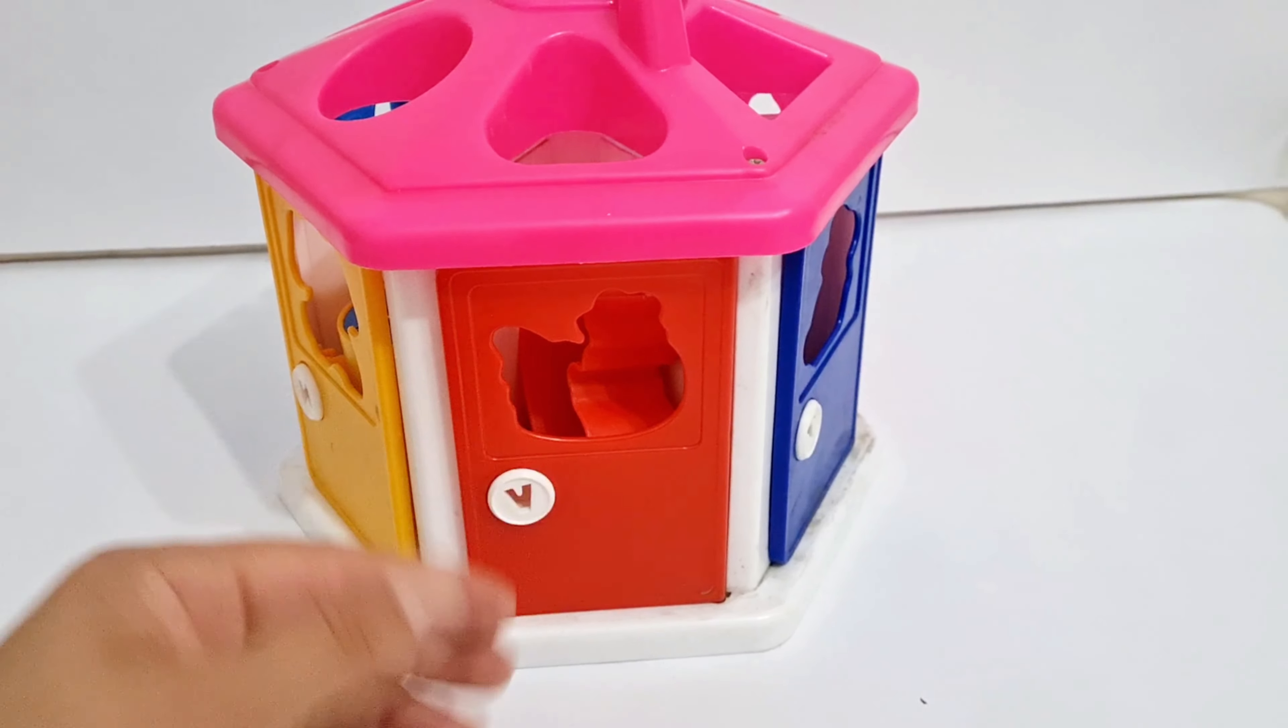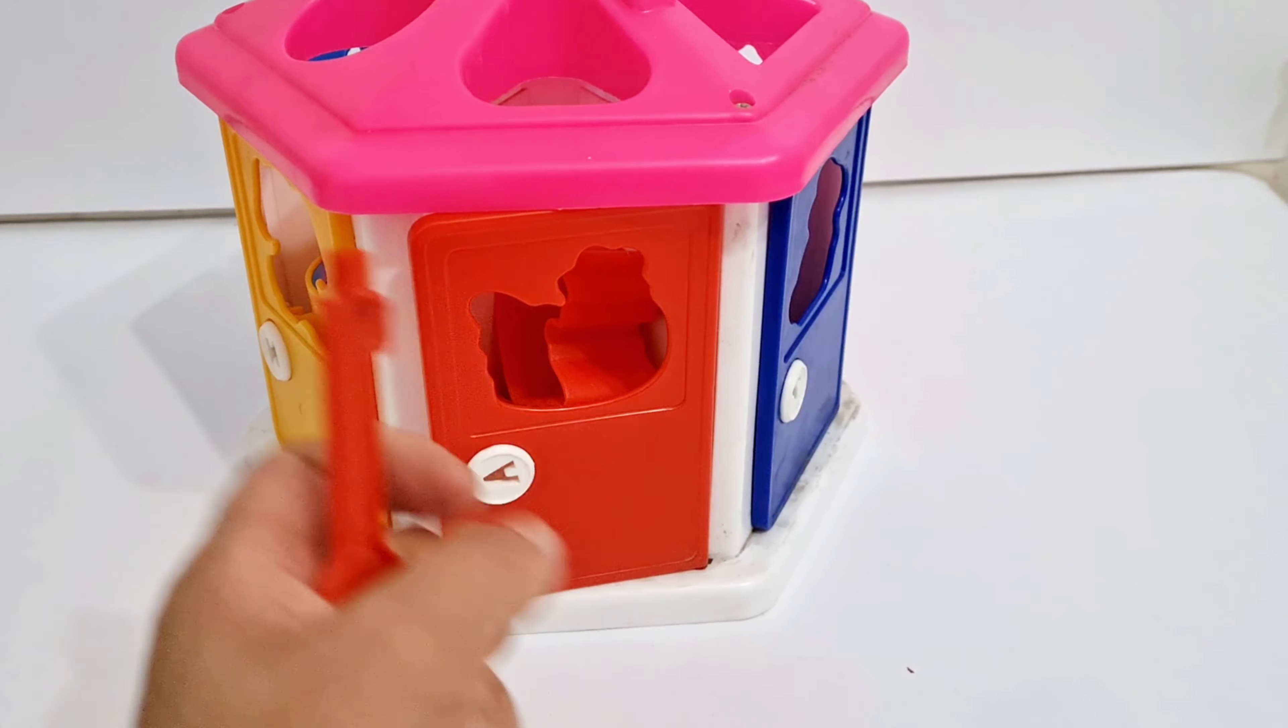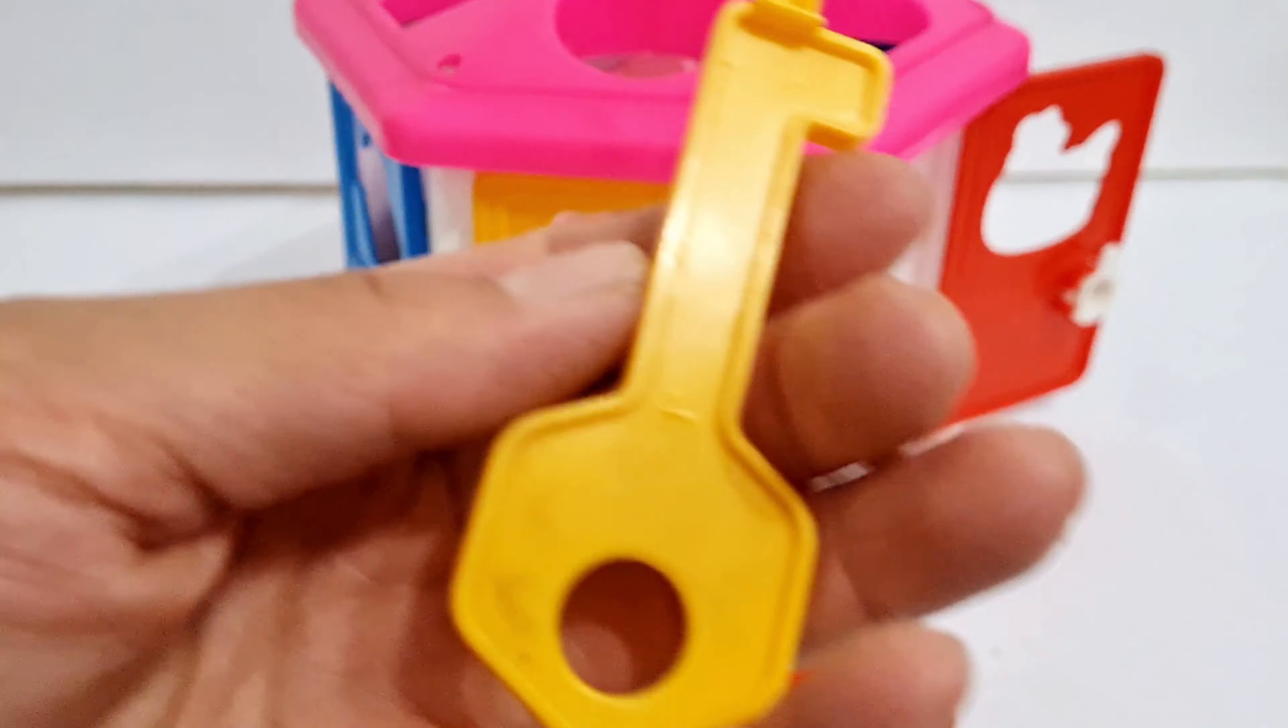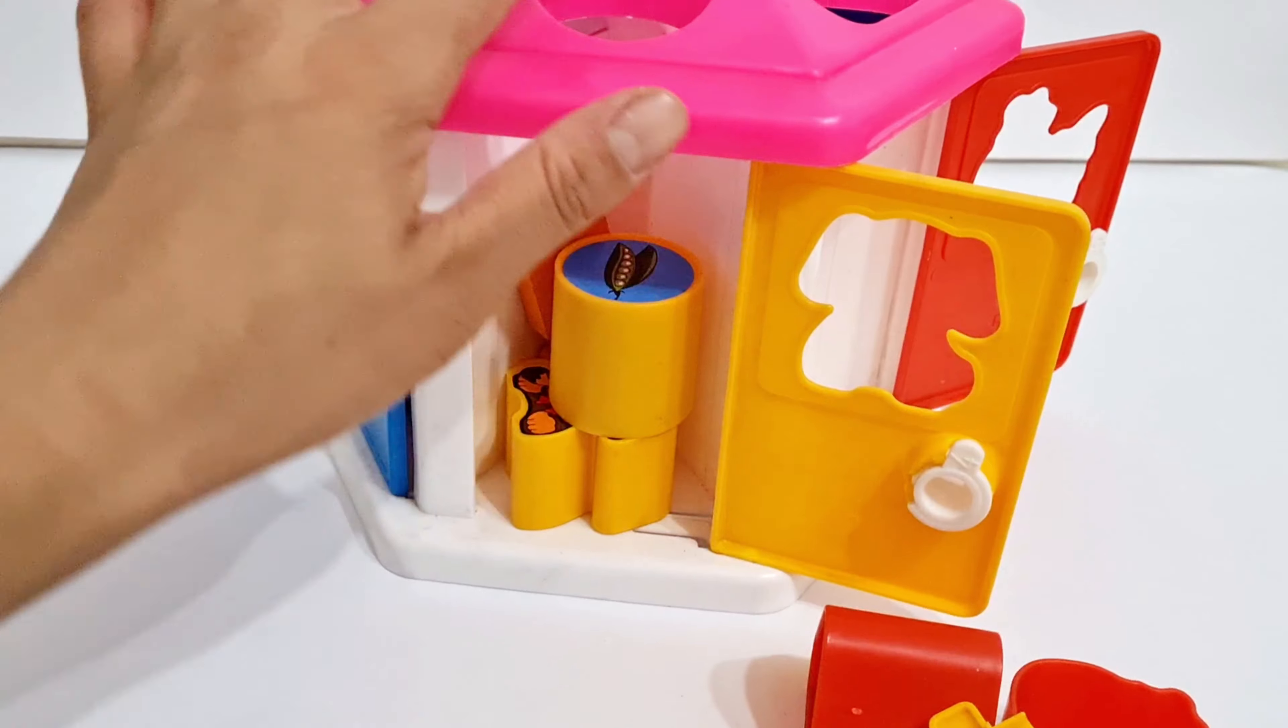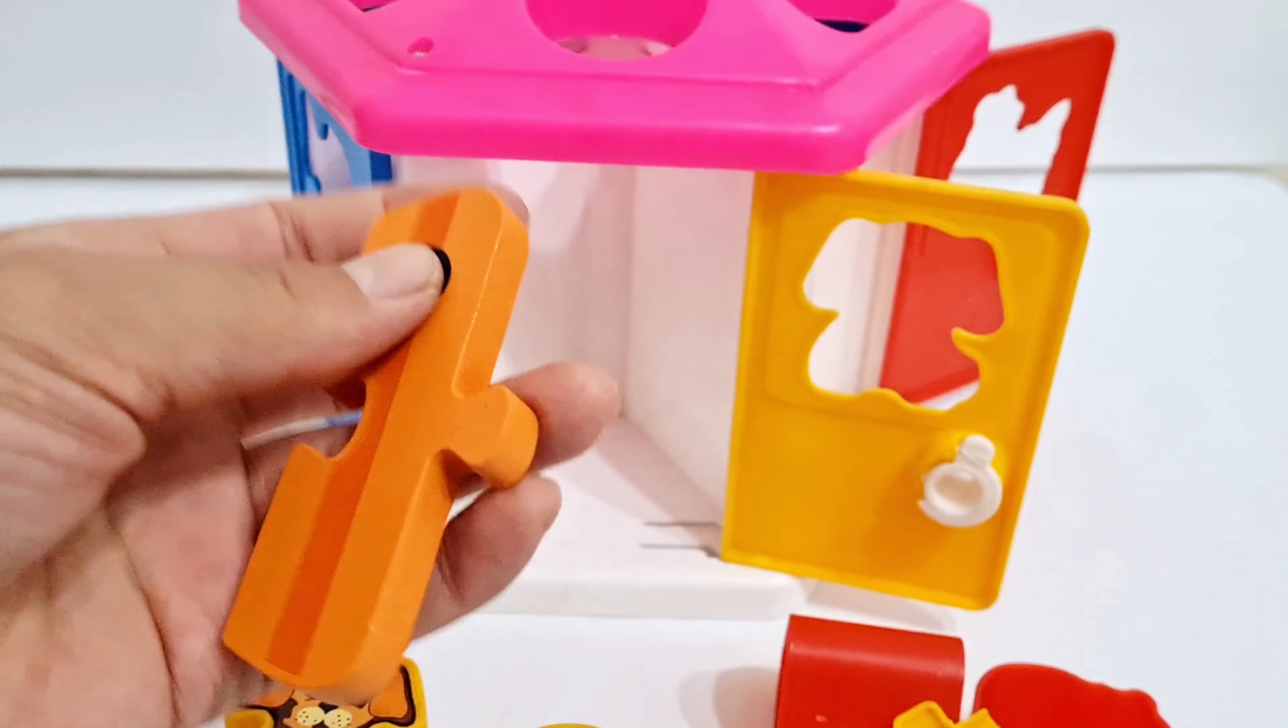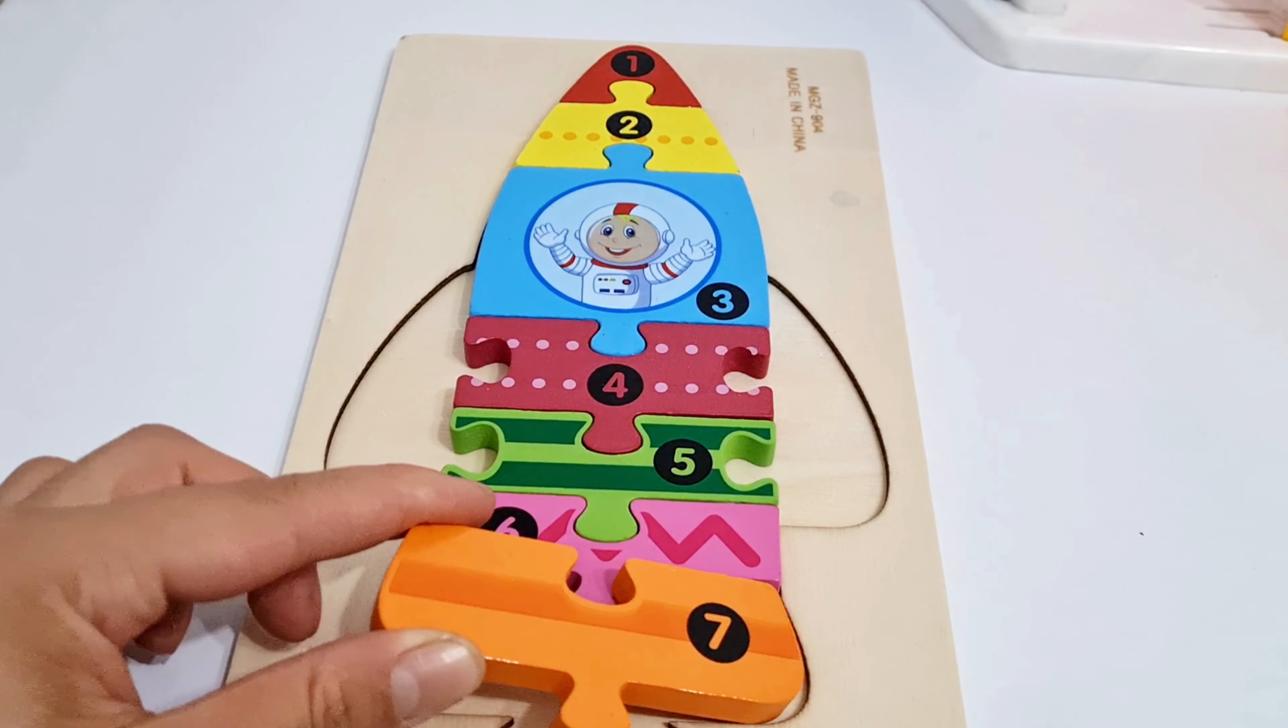Oh. Here beautiful house with colorful doors. Let's open red door with red key. Maybe next piece of puzzle is here? Not. Here are all shapes. Oh no. Let's open yellow door with yellow key. Oh. Here circle, puppy, and our next piece of puzzle. Number seven. Number seven. We put it right here.